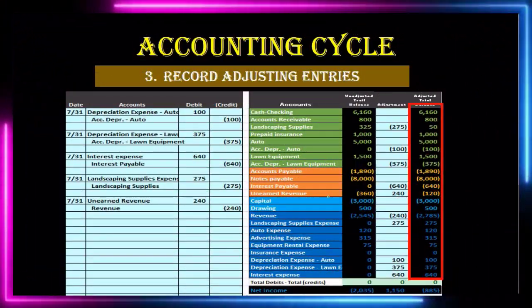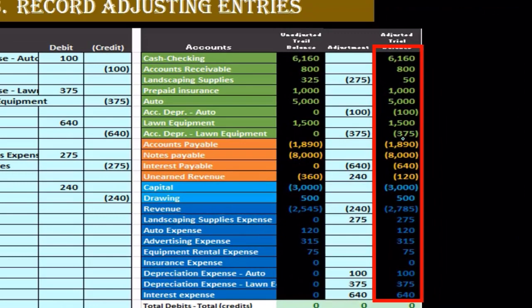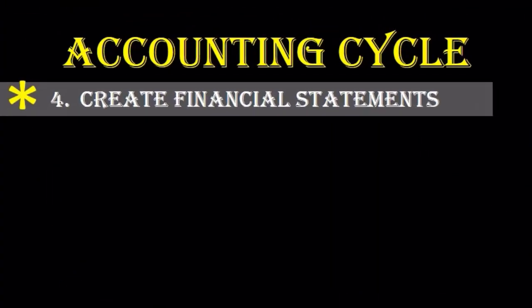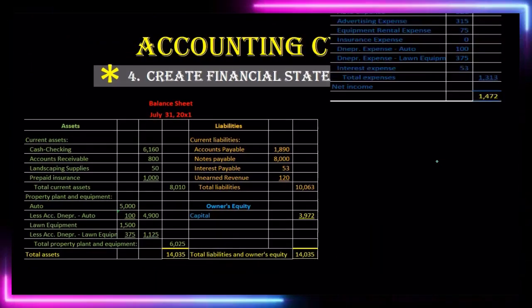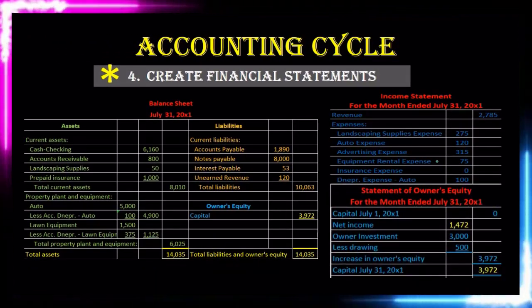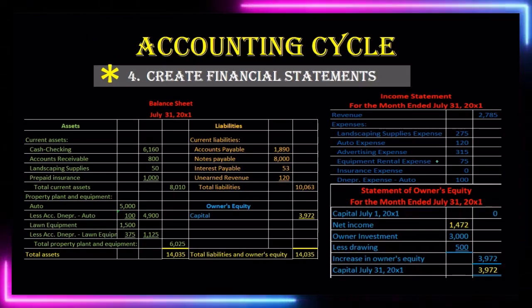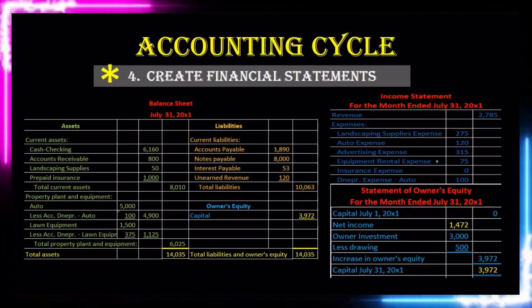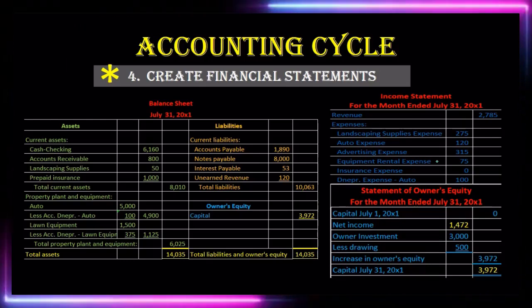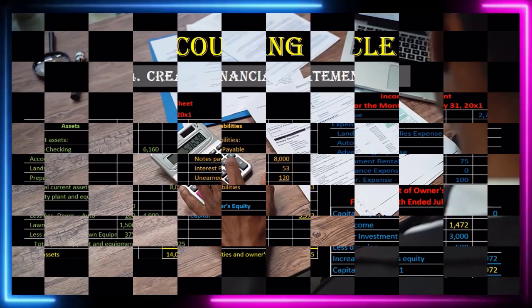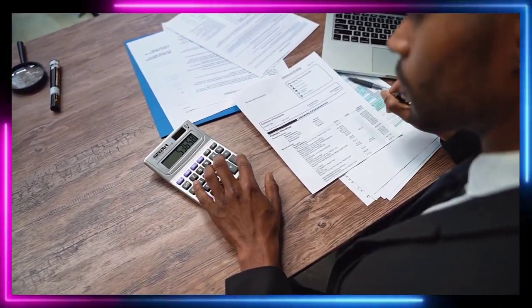We then take the adjusted trial balance — now adjusted to be on an accrual basis, or as close to it as possible — and use it to create the financial statements: the end product. This is what we're trying to get to: the balance sheet, the income statement, and the statement of owner's equity. In financial accounting, this is the product going out to external users, and also the basis for most managerial accounting reports used internally.